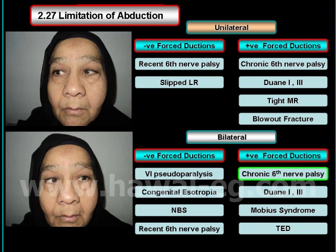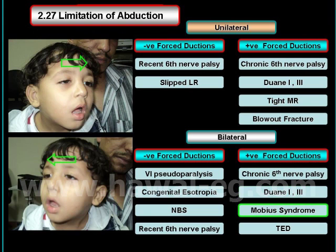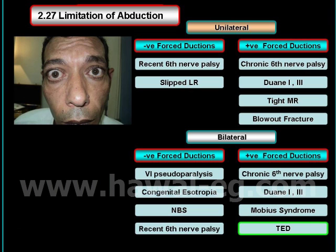About the restrictive causes of bilateral limitation of abduction: they are chronic bilateral sixth nerve palsy, Duane syndrome type 1 or 3, Möbius syndrome, and thyroid eye disease.